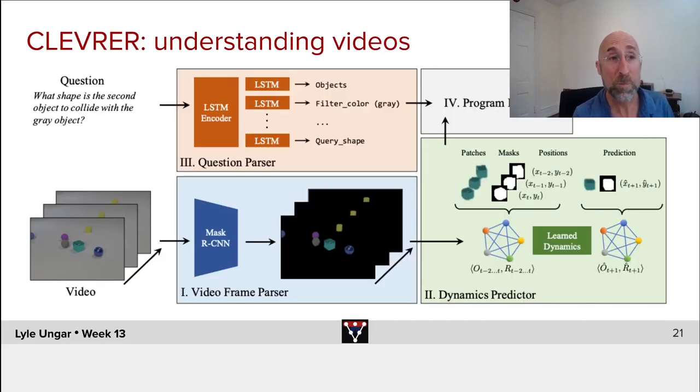So how does it work? You watch a video. The computer does. It's got some sort of a mass convolutional neural net that parses the frames, recognizes objects. It has an LSTM encoder. The LSTM learns to recognize what are the objects, what are their colors, what are their shapes. It then pulls that into a little model that it uses. We're moving toward causality, a model of the world. They're discrete things that have dynamics.